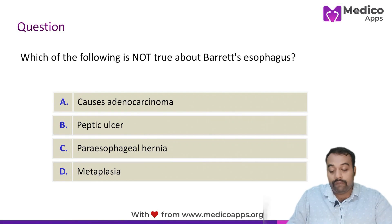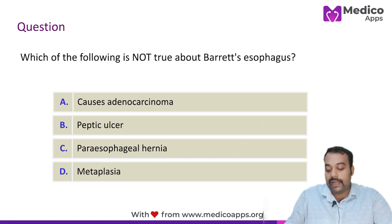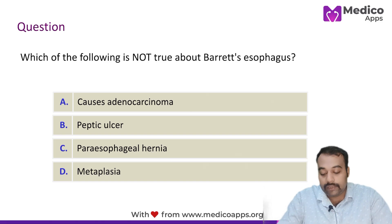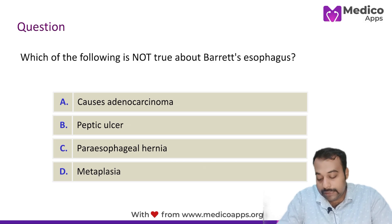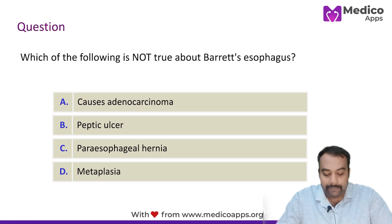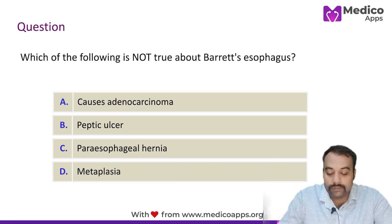Our next question is: which of the following is NOT true about Barrett's esophagus? The options are: A) it causes adenocarcinoma, B) peptic ulcer, C) paraesophageal hernia, and D) metaplasia. To answer this question, you need to know a few important things regarding Barrett's esophagus.